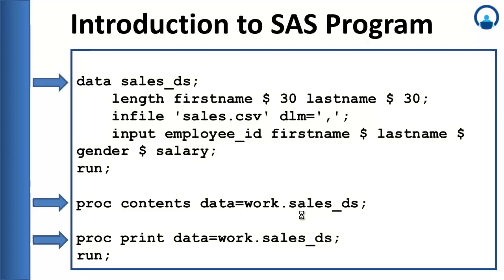This is a typical SAS program. There are three SAS steps here: one DATA step and two PROC steps. The DATA step starts with the keyword DATA and ends with the keyword RUN. The third step starts with PROC and ends with RUN. However, the second step only starts with PROC and has no RUN statement — since the next statement after it is another PROC step, SAS automatically understands the end of that step. It is important to note that if you do not include a RUN statement, the next statement in your SAS program should be a DATA step or a PROC step.